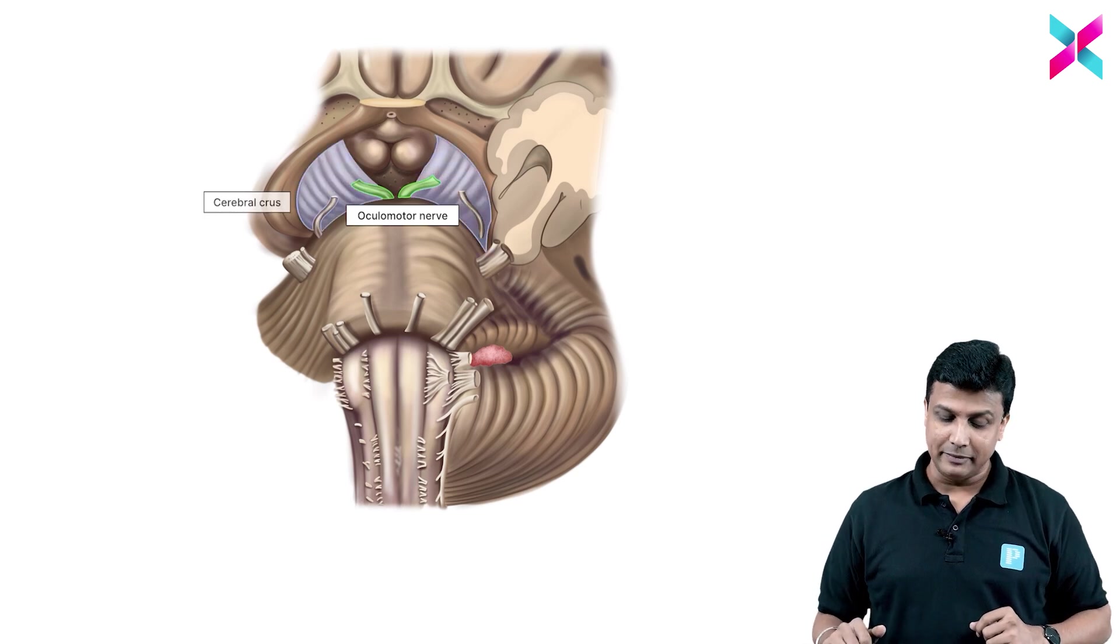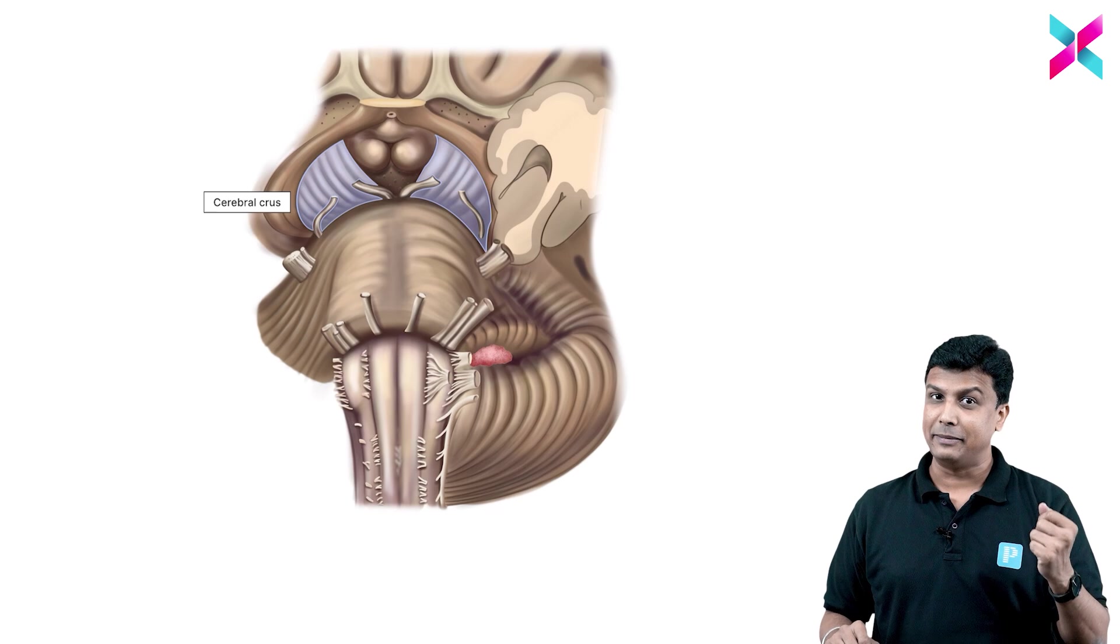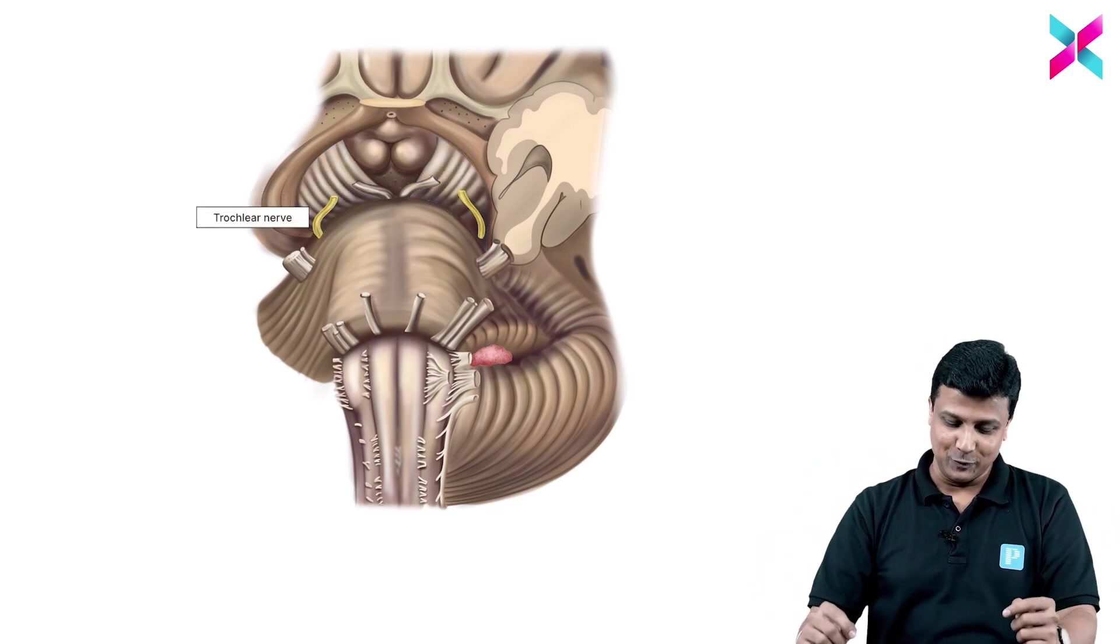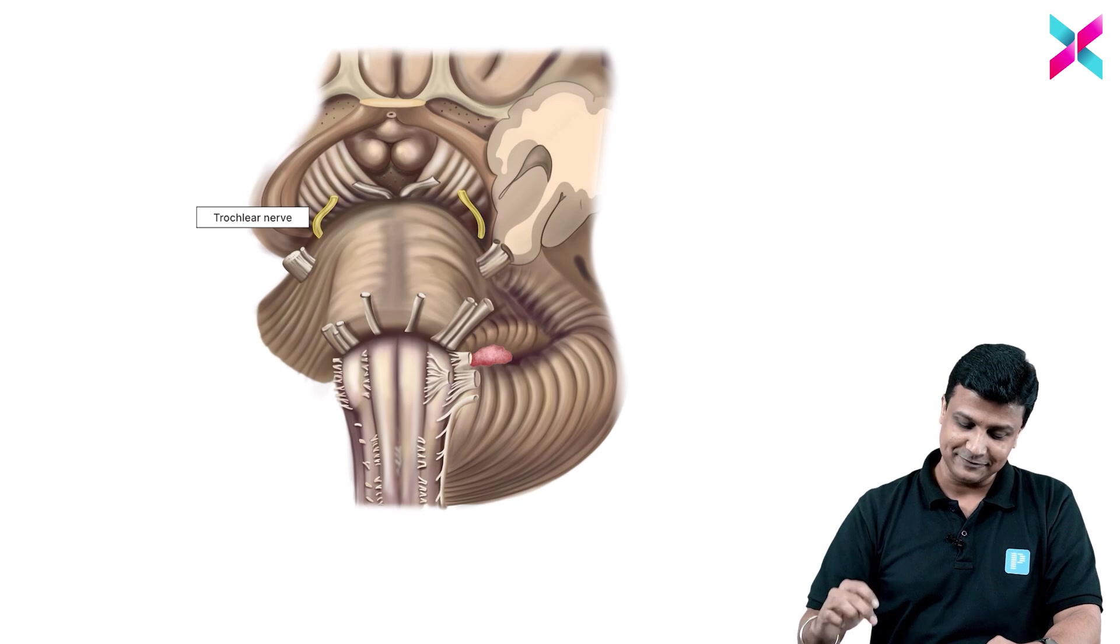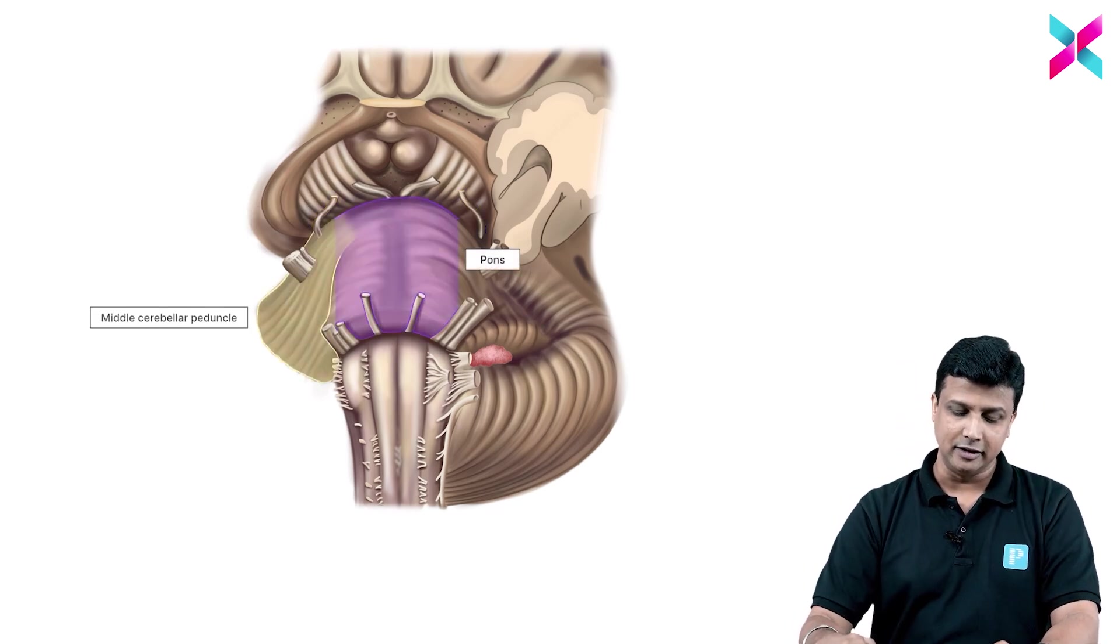And of course this part in the middle here will be the crus cerebri, which is a part of your cerebral peduncle only. And then lateral to that, the nerve which is coming from behind will be the fourth nerve, that is your trochlear nerve.